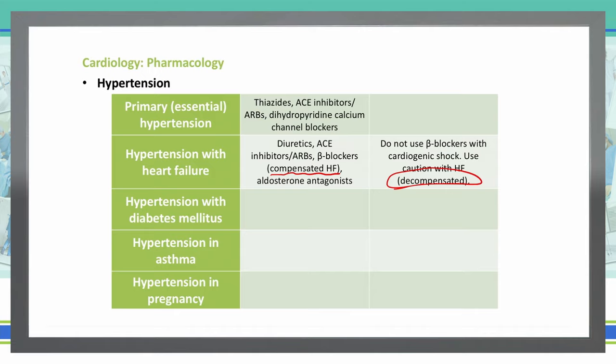Patients that have diabetes mellitus along with hypertension — we're going to use ACE inhibitors or angiotensin receptor blockers, calcium channel blockers, thiazide diuretics, and/or beta blockers.